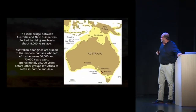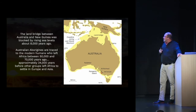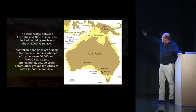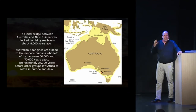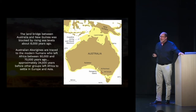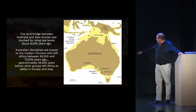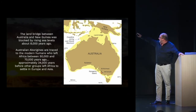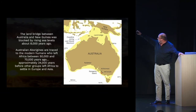You can see how these land masses were connected. The land bridge between Australia and New Guinea was blocked by rising sea levels about 8,000 years ago. About 50,000 to 70,000 years ago they would have been able to come from Africa, cross over and come through these land bridges. As the waters started to rise, it blocked them and stopped further travel. The southern part of Australia was connected to Tasmania, Kangaroo Island was also connected to the mainland, and this land bridge connected all the way up to New Guinea.